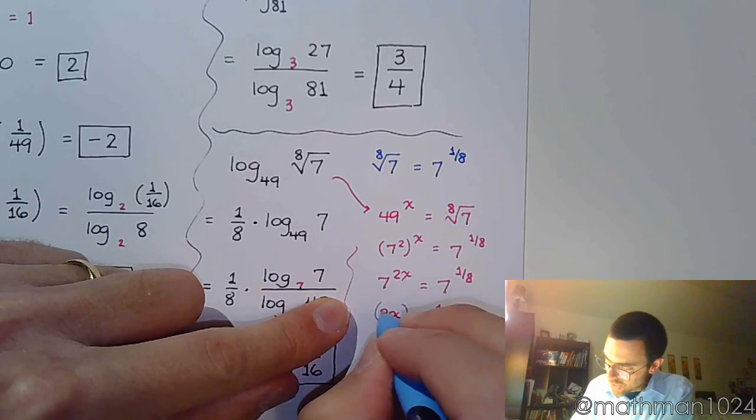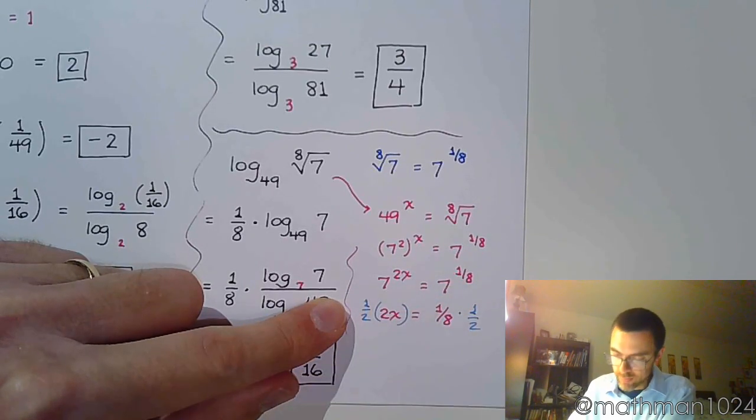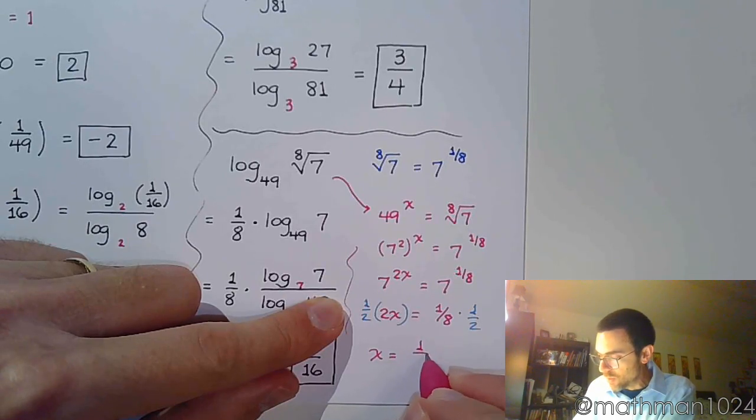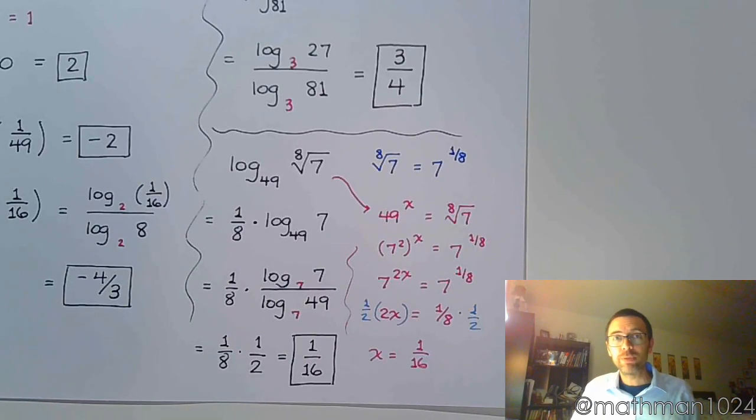I can multiply both sides of this equation times 1 half. And, x is equal to 1 over 16. Still the same. Man, I love logarithms. Don't you?